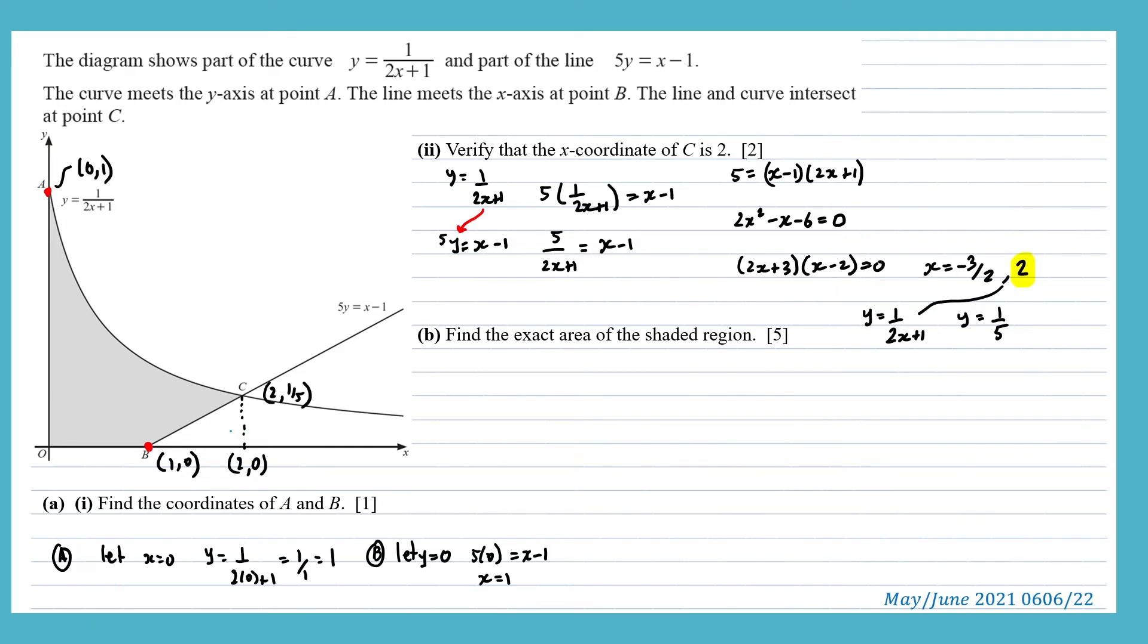The next thing we need to consider is the area of this small triangle. An area formula is a half times the base, which is 1 unit, times the height, which is 1 fifth. So that will give us 1 tenth. And we'll use that in a minute.